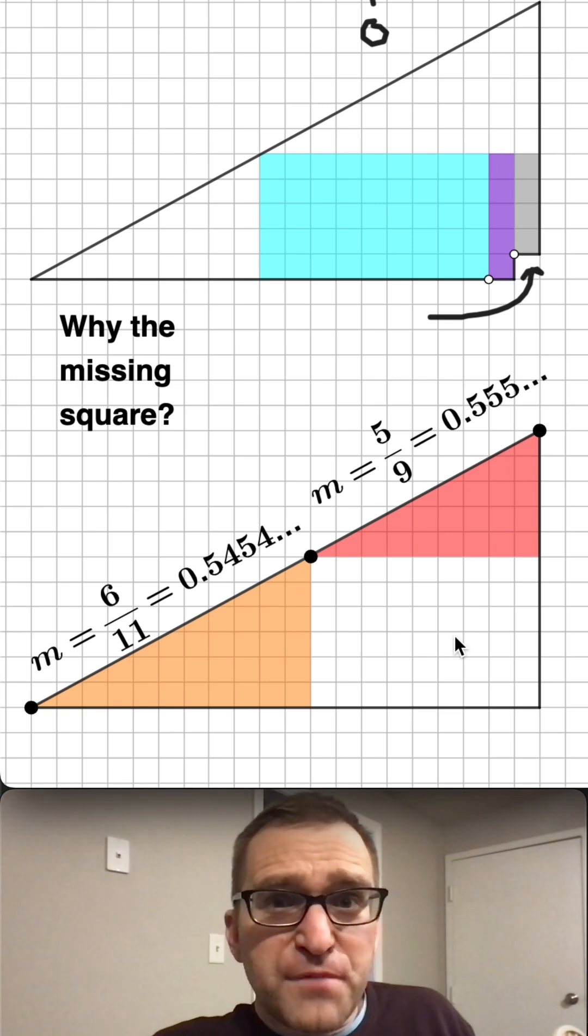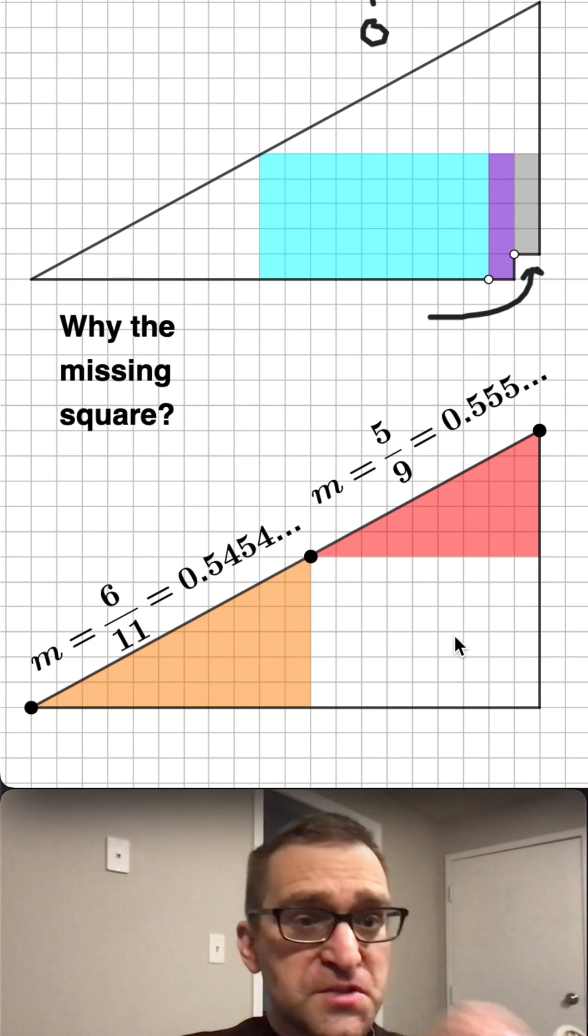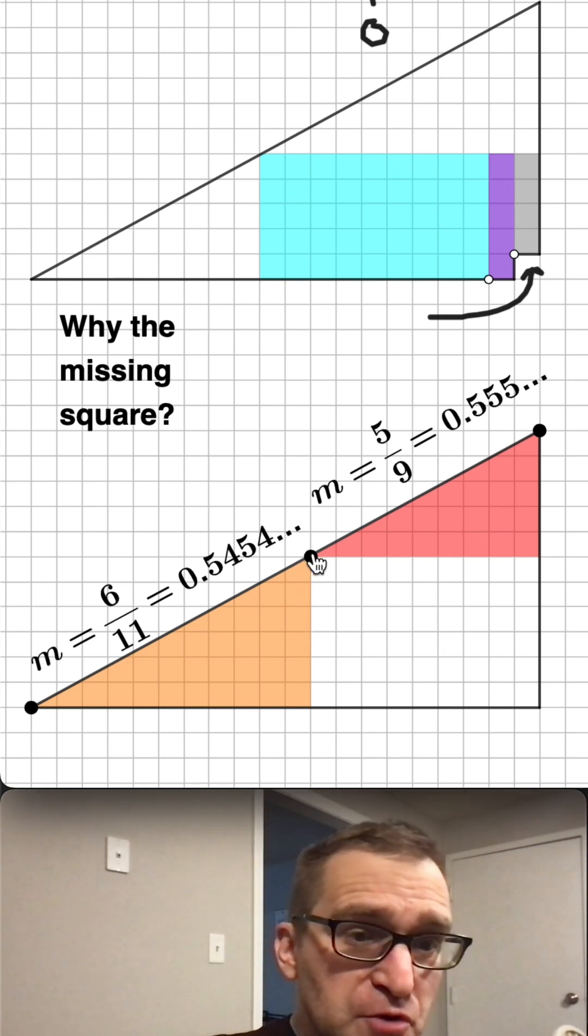They're only, the gradients are only off by less than 1/100th, right? And so our eyes aren't going to be able to detect that well unless we zoom right in.